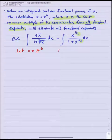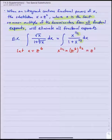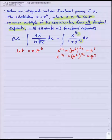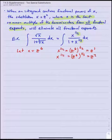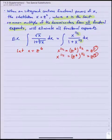Notice immediately what that does: x to the 1/2 becomes z cubed, and x to the 1/3 becomes z squared. So if I raise z to a power which is a common multiple of two and three, I'm going to be dividing that common multiple by two and three, which means no more fractional exponents. This is a very useful trick if your integrand contains two or more different fractional powers, or even if they're the same fractional power.